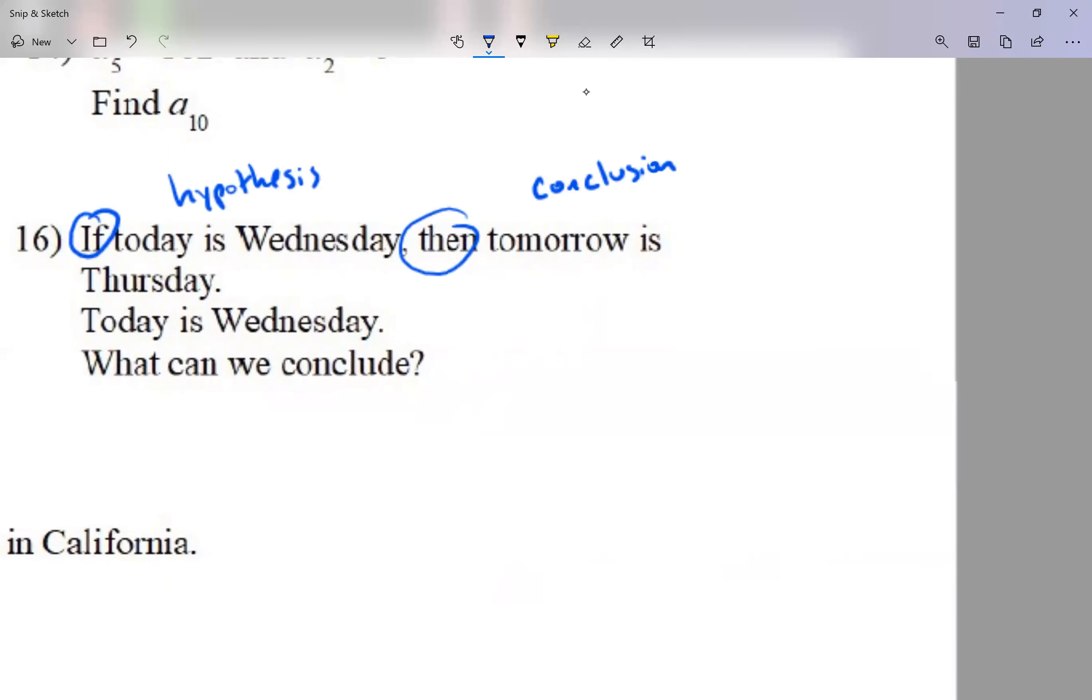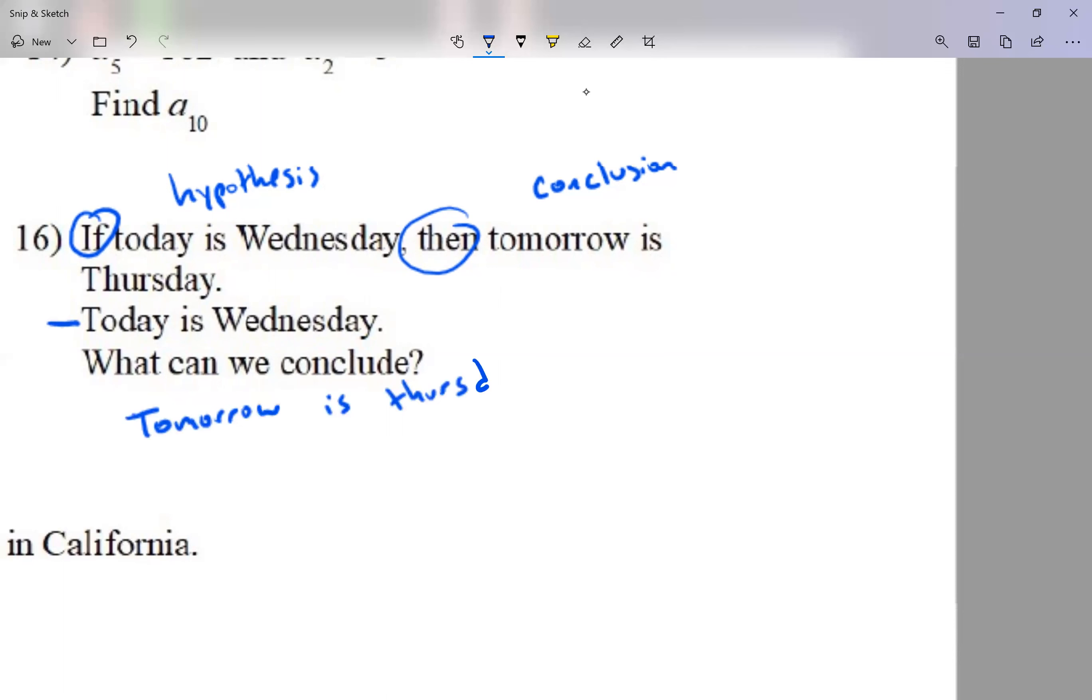If the hypothesis is true, then that conclusion has to be true. Now here: if today's Wednesday, then tomorrow's Thursday. That's one statement. The second statement is: today's Wednesday. Okay, so they tell me the hypothesis is true. So what can we conclude? I'm just gonna write: tomorrow is Thursday. Yeah, that's true, right? Today's Wednesday, tomorrow's Thursday.